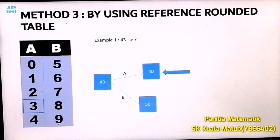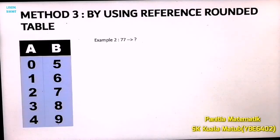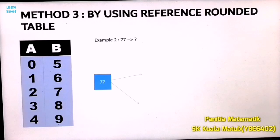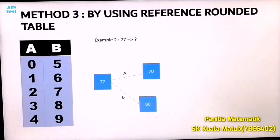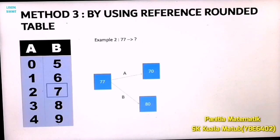So the answer is 40. Now let's round number 77 to the nearest ten. Write number 77 and draw two arrows — label A for the upside arrow and B for the downside arrow. Number 77 is between number 70 and 80. Look at the ones digit — it's 7. Find number 7 inside the reference rounded table. Number 7 is under B. Therefore, we choose the number pointed by arrow B as the answer. The answer is 80.